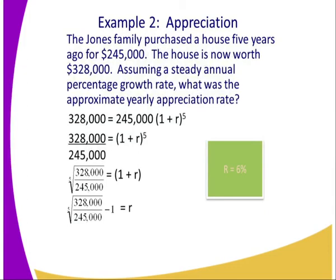Let us take the next example, still on appreciation. The Jones family purchased a house five years ago at $245,000. The house is now worth $328,000. Assuming a steady annual percentage growth rate, what was the approximate yearly appreciation rate? Using the formula, $328,000 equals $245,000 times (1 + R) raised to the power 5. Solving gives a rate of approximately 6%.